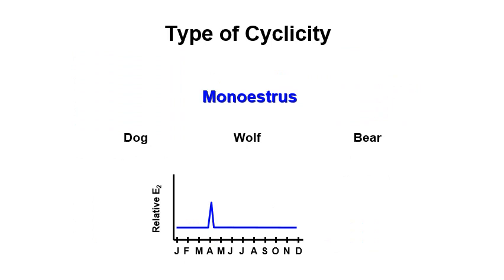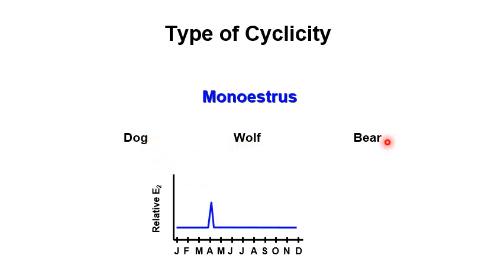We also have animals that are monoestrous, meaning they exhibit a single estrus, or maybe two, during a year. Examples include the dog, which will only peak estradiol one time. This cycle type is exhibited by the dog, the wolf, and the bear.